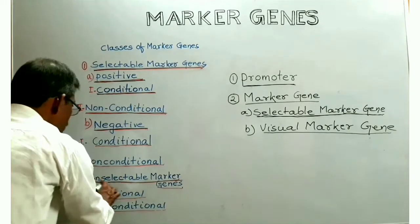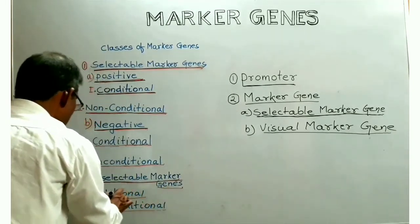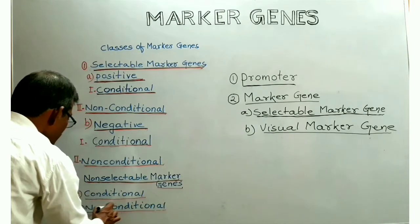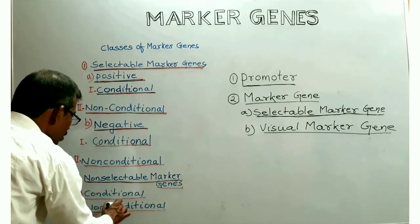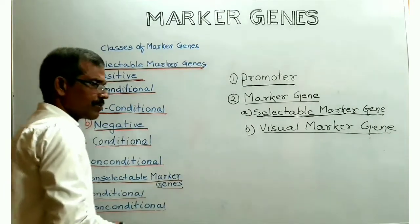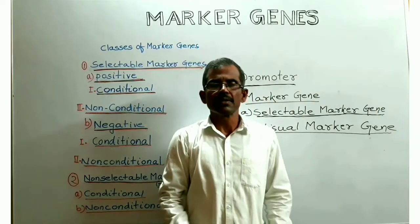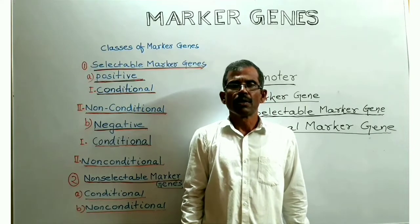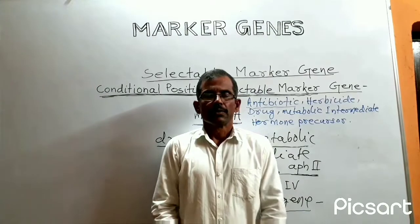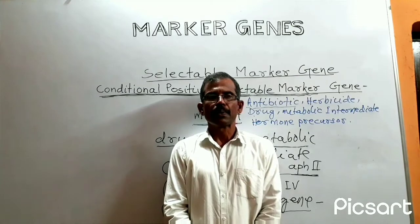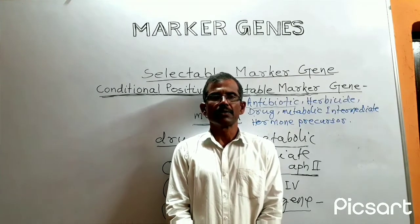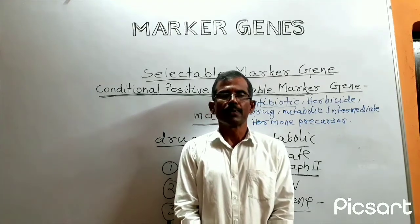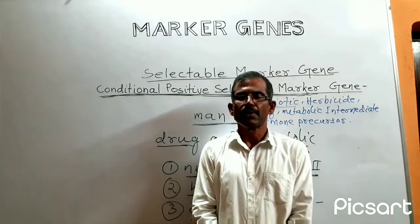Non-selectable marker genes are also called scorable marker genes or reporter genes. Over 50 selectable marker genes have been described in the literature, but only a few of them have been adopted for routine use.